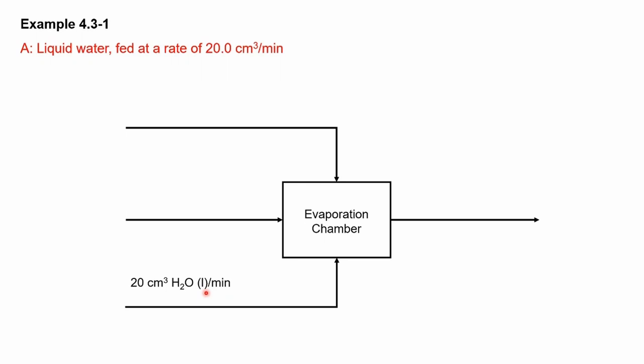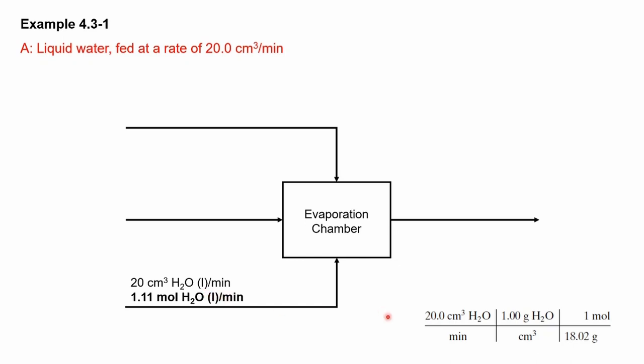This flow rate is a volumetric flow rate, and in chemical engineering it's not a good idea to use volumetric flow rates because almost every other quantity in your problem will be given in molar or mass flow rates. So you should convert it. Since everything in this problem is in molar flow rates, I've converted it to 1.1 mol water (liquid) per minute using the density of water and the molar weight of water as the conversion factors.